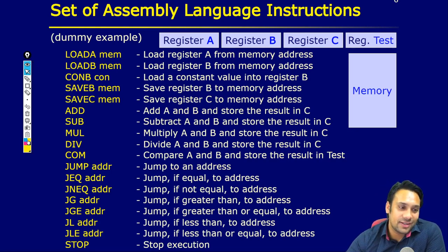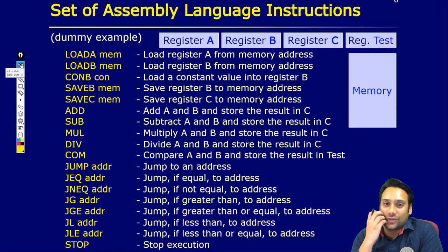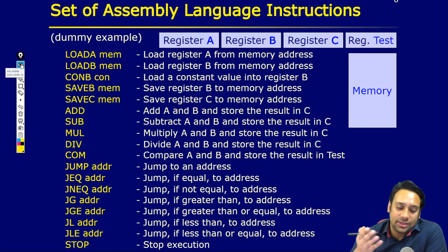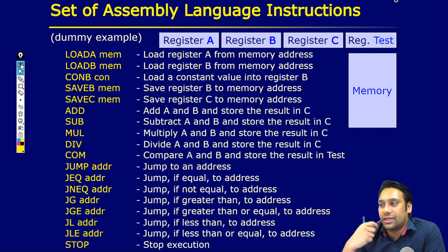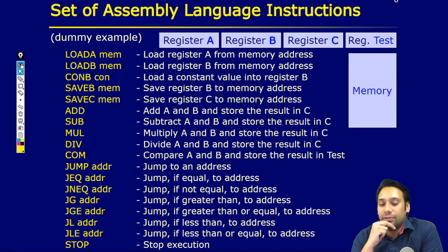In this presentation, you can see how we can show assembly code. This is some example of assembly code. We will check this assembly code later — how can we generate it, and what is the use of this assembly code?